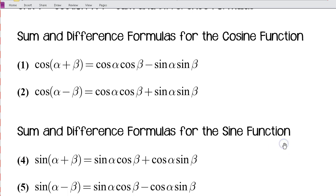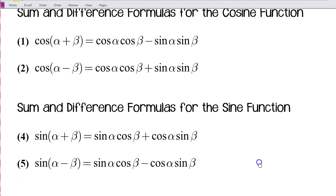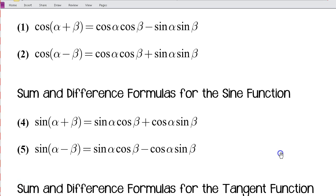You'll notice here we have six different formulas. These are basically identities that are going to help us most of the time solve some numerical type problems, as opposed to verifying identities, although we will use them to verify or establish identities as well. We're not really going to talk about the derivation of these — I'm just going to give them to you and you'll need to learn how to use them.